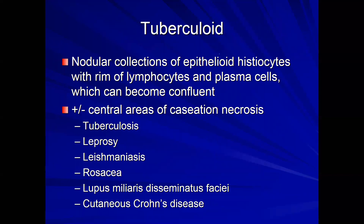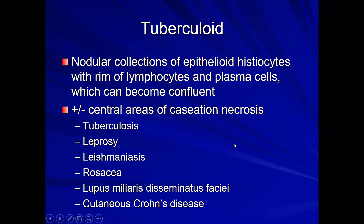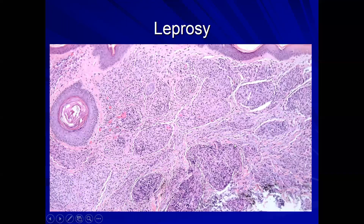Moving on to tuberculoid granulomas — nodular collections with a rim of lymphocytes and plasma cells that can become confluent. These are seen in infectious processes with or without caseating necrosis: tuberculosis, leprosy, leishmaniasis, Crohn's disease, other mycobacterial infections, lupus miliaris, and rosacea.